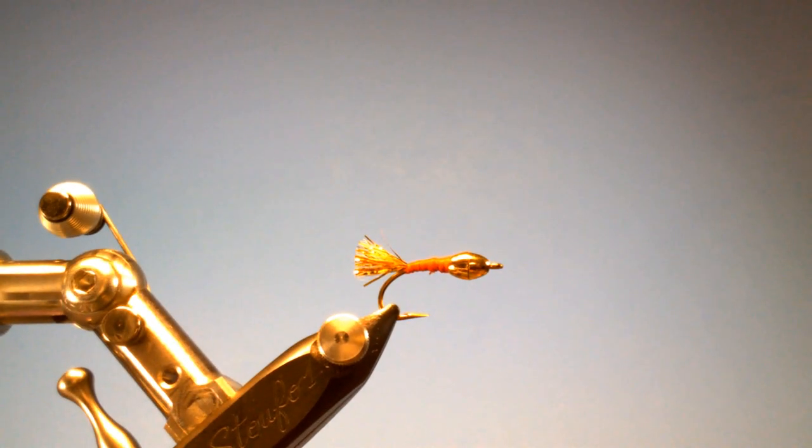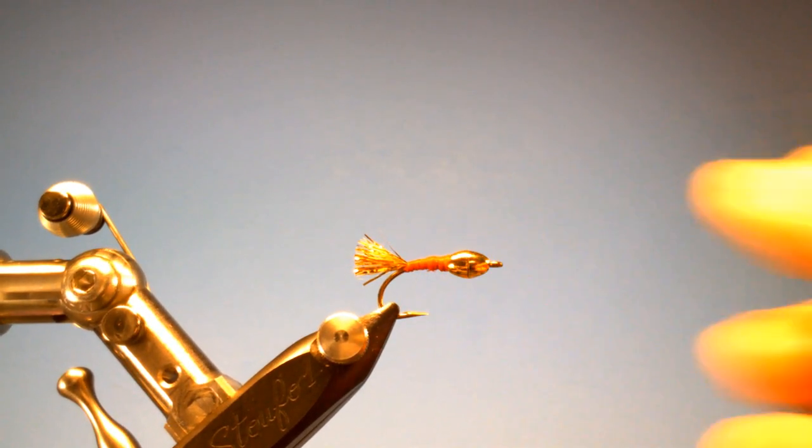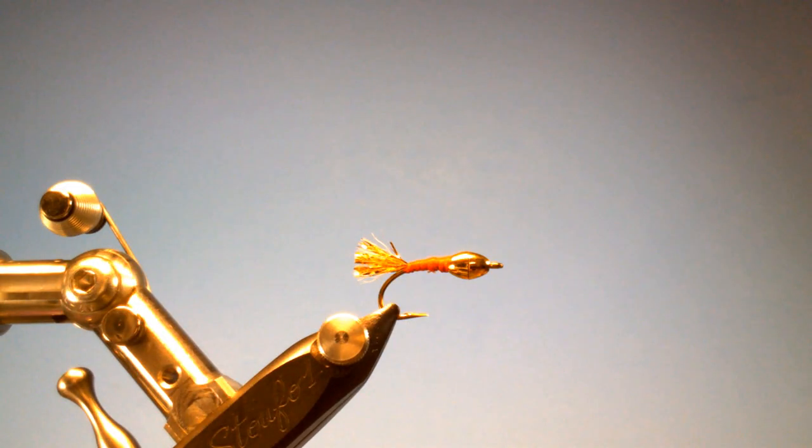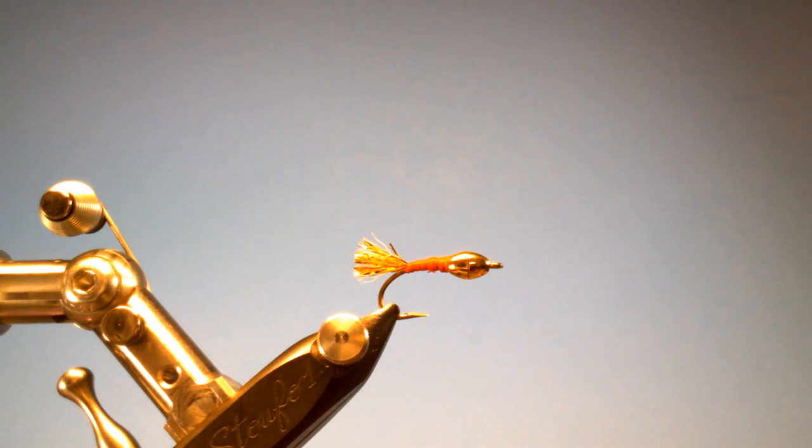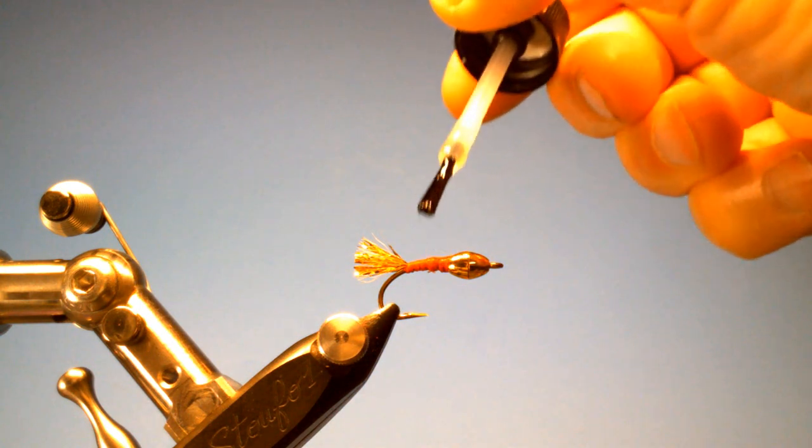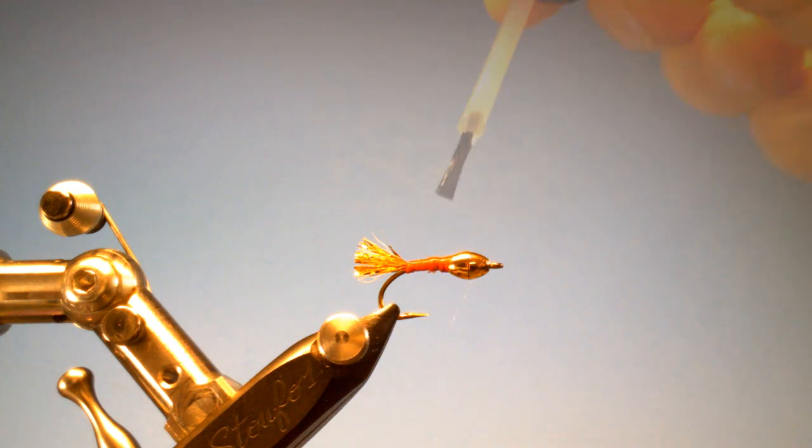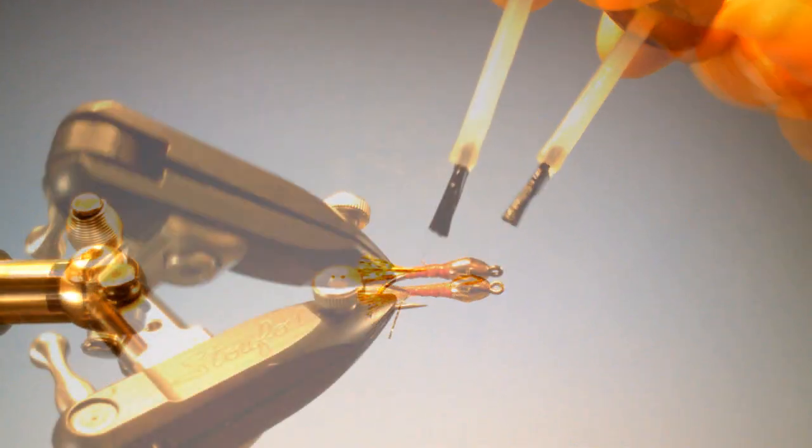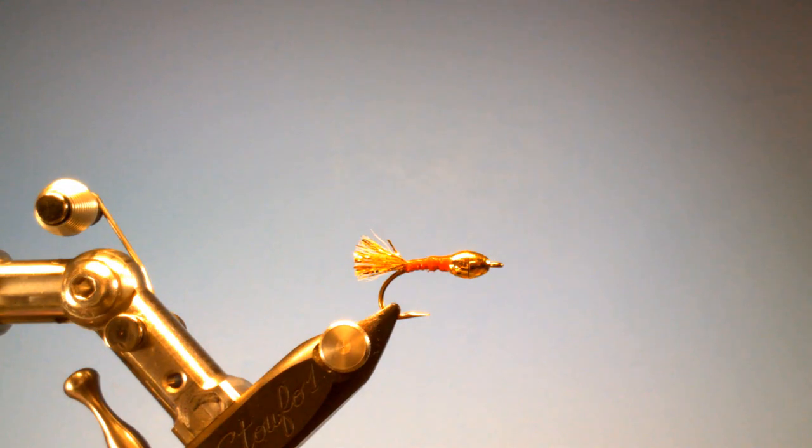Oh, a little too tight. But the knockout. Alright. Now we're going to add a little bit of head cement. You can use UV resin to protect those threads.